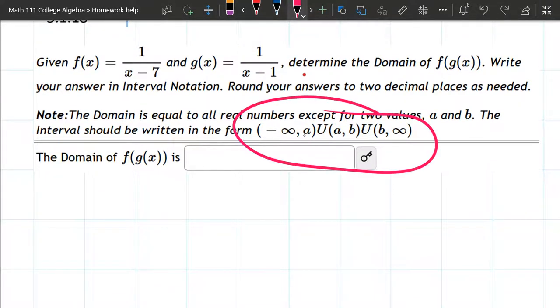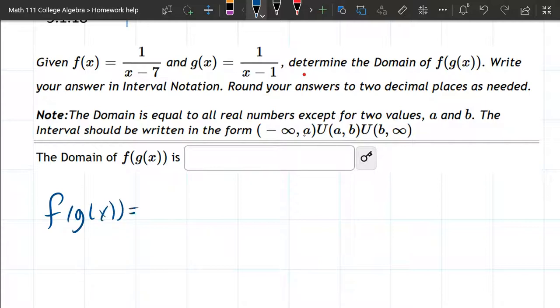There's a little information about what the answer's gonna look like. But that's all right, we're just gonna go ahead and start composing them. So we gotta go f of g of x. Always going inside function first. So g is one over x minus one.